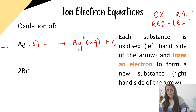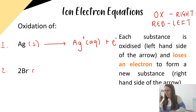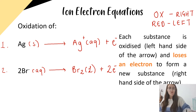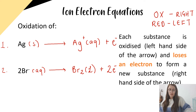Our second example is bromine. Looking up bromine: bromine ions are aqueous, and when they're oxidised they become Br₂, because bromine is diatomic, and we would be losing two electrons. So again, I'm just reading off page 12 of the data booklet — right to left for oxidation, left to right for reduction.